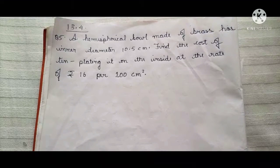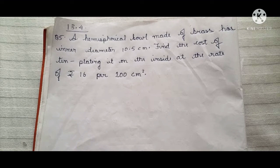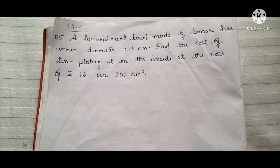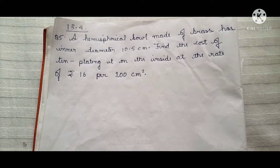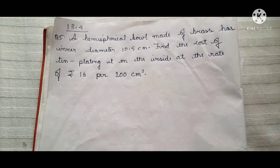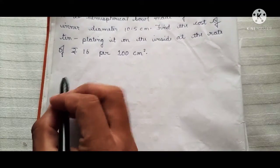Hello my dear students, today we'll be doing 13.4 question number 5. A hemispherical bowl made of brass has an inner diameter of 10.5 centimeters. Find the cost of tin plating it on the inside at a rate of rupees 16 per 100 centimeter square. Okay, so here we'll write the given value here.